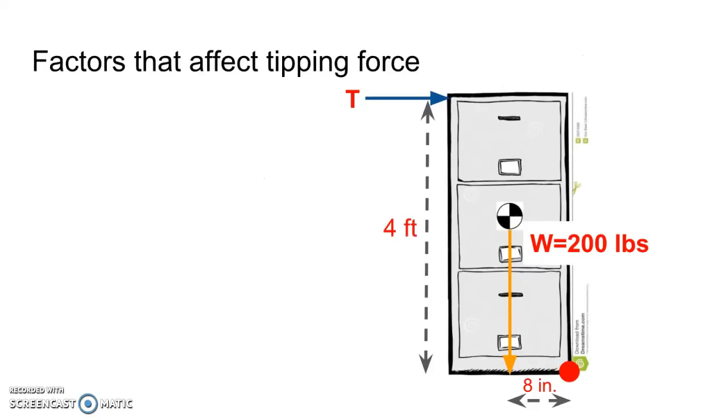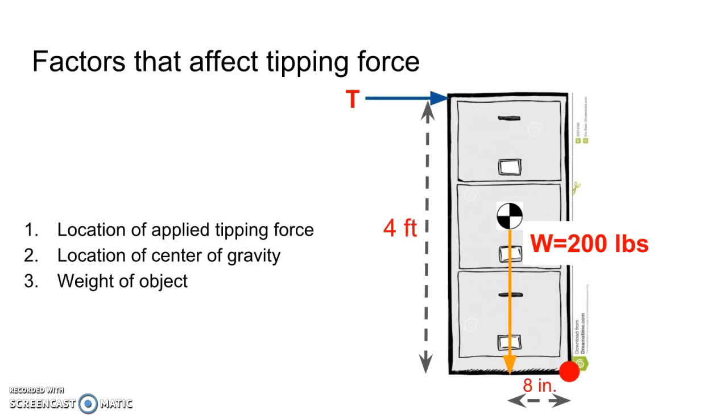Things that might affect the tipping force and then we'll be done. What would actually affect T and how much I would need to tip things over? There's only a few factors, three in fact. One of them is how high up did you apply the tipping force. If I applied the force lower, that would make a difference. If the file cabinet was 20 feet tall and I pushed at the top, that would also make a difference. So what is the height of the applied tipping force? Where is the center of gravity of the object? Because if that eight inch value changed, if this was an off-centered weight, that would make a huge difference. And then also, what's the weight of the object? You fill that thing up or load it up with papers on the bottom drawer, that's going to make a huge difference. If this thing weighed a thousand pounds instead, it's going to be much harder to tip over. So those are the three things that you can do to affect the tipping force required to knock something over.